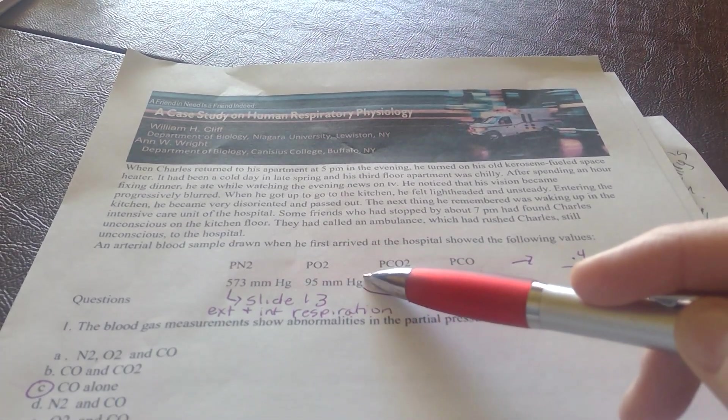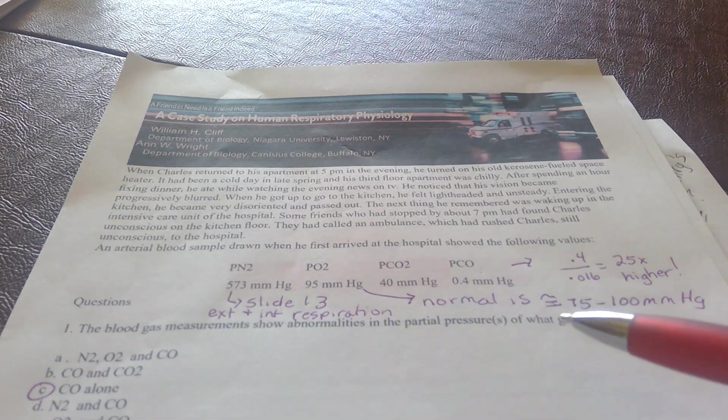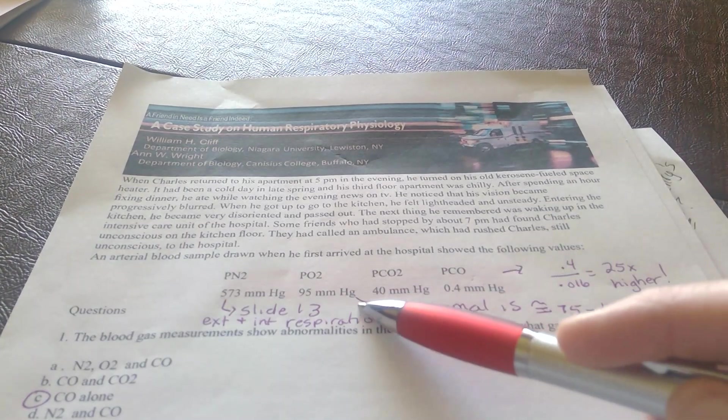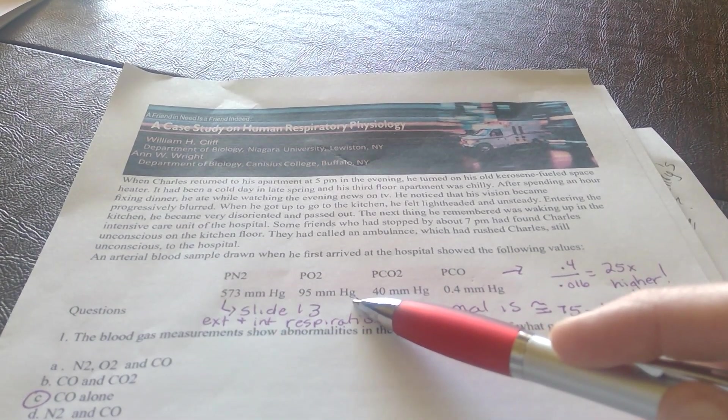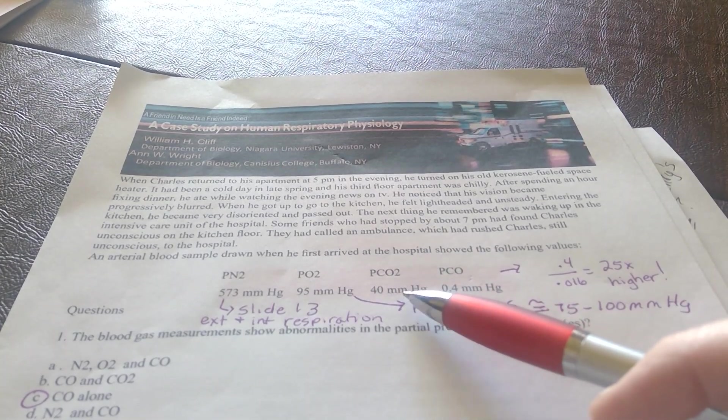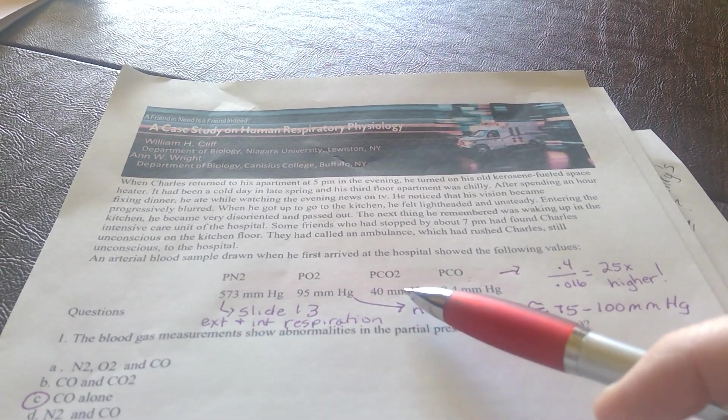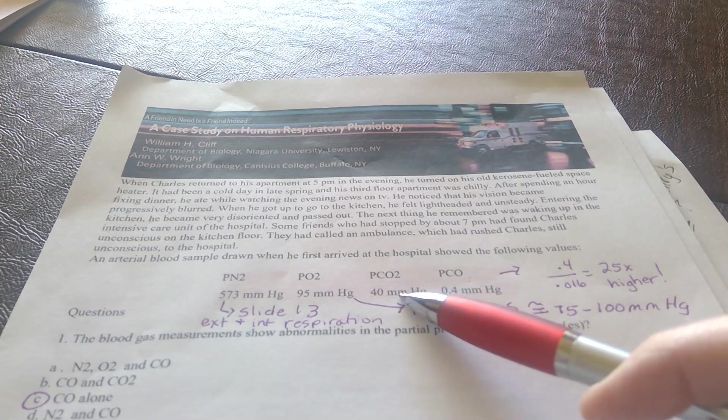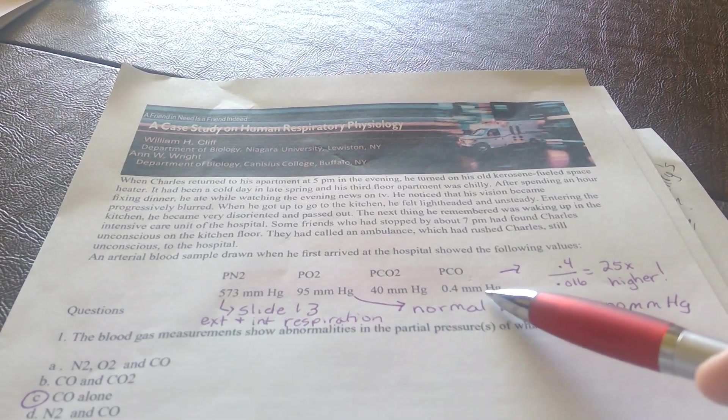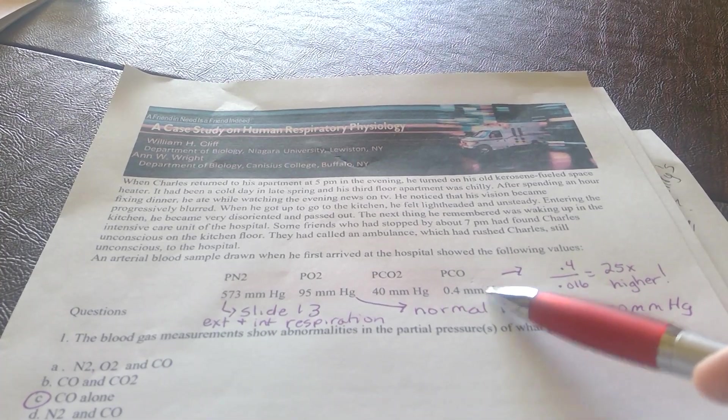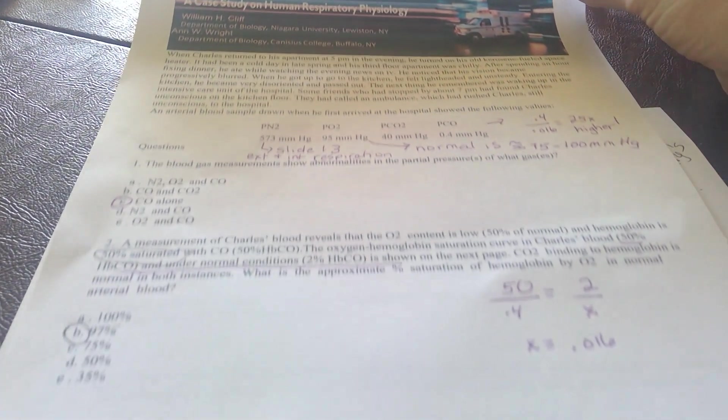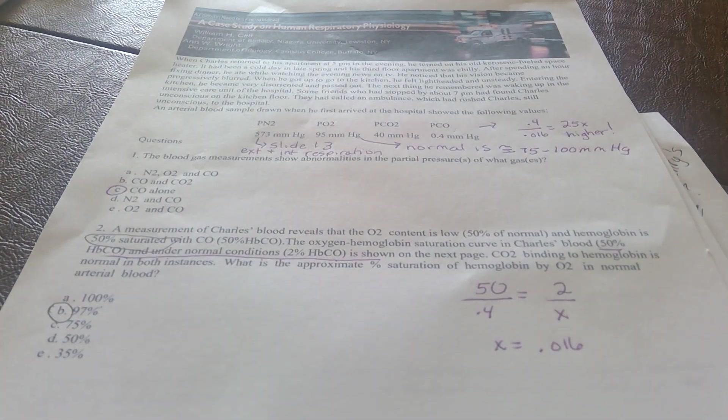Normal values of oxygen are 75 to 100 millimeters of mercury, so his blood oxygen partial pressure is normal. CO2 from our acid-base lecture is normal from 35 to 45 millimeters of mercury. What isn't normal is his carbon monoxide levels. How do you know that?